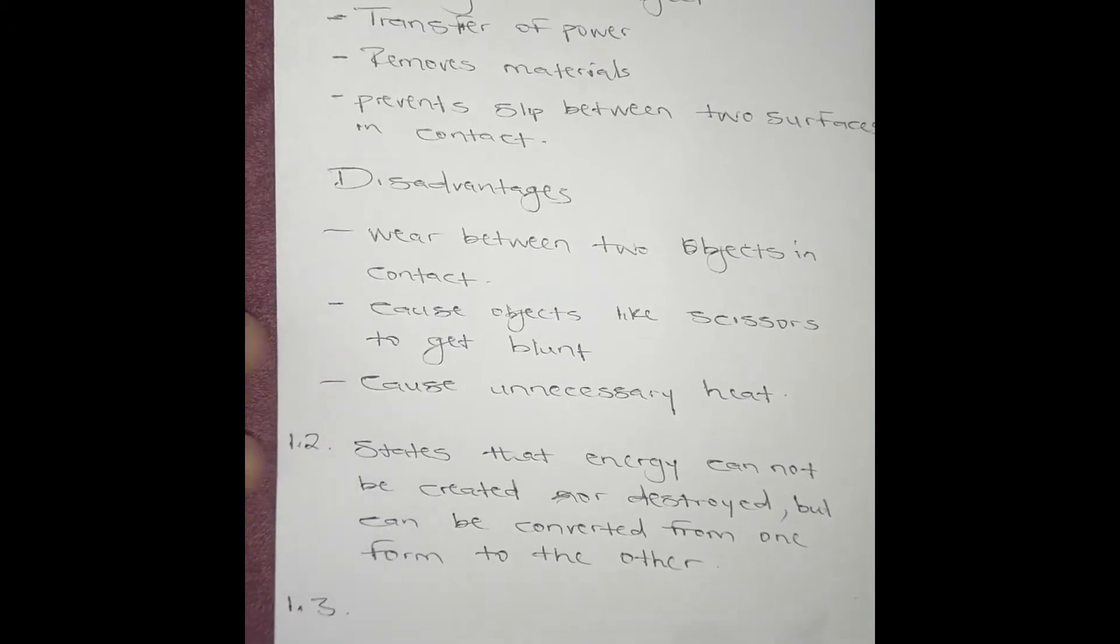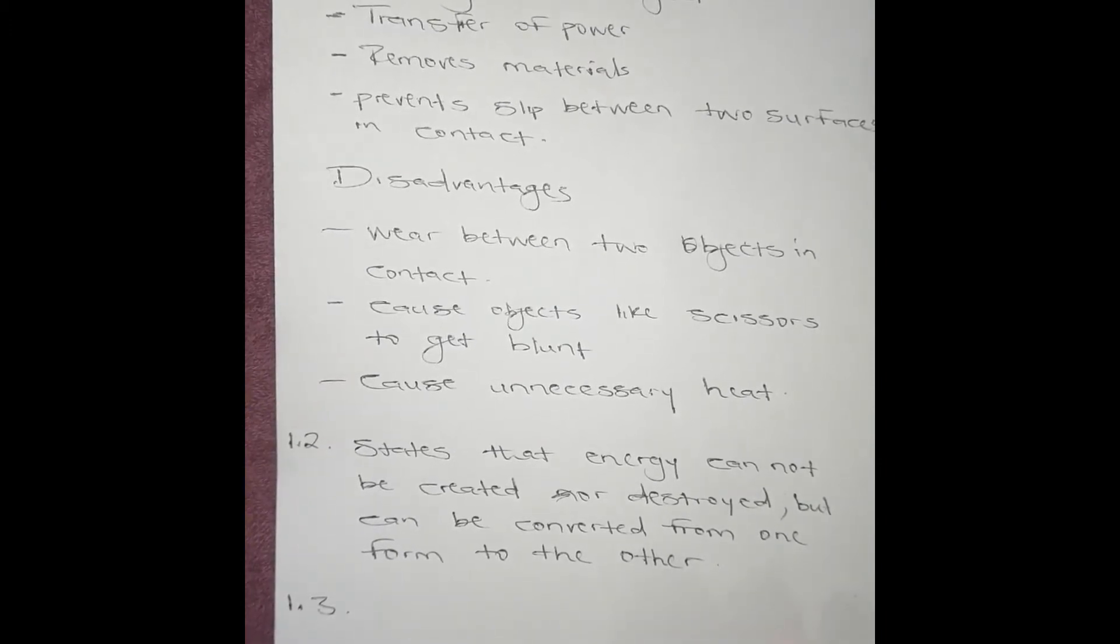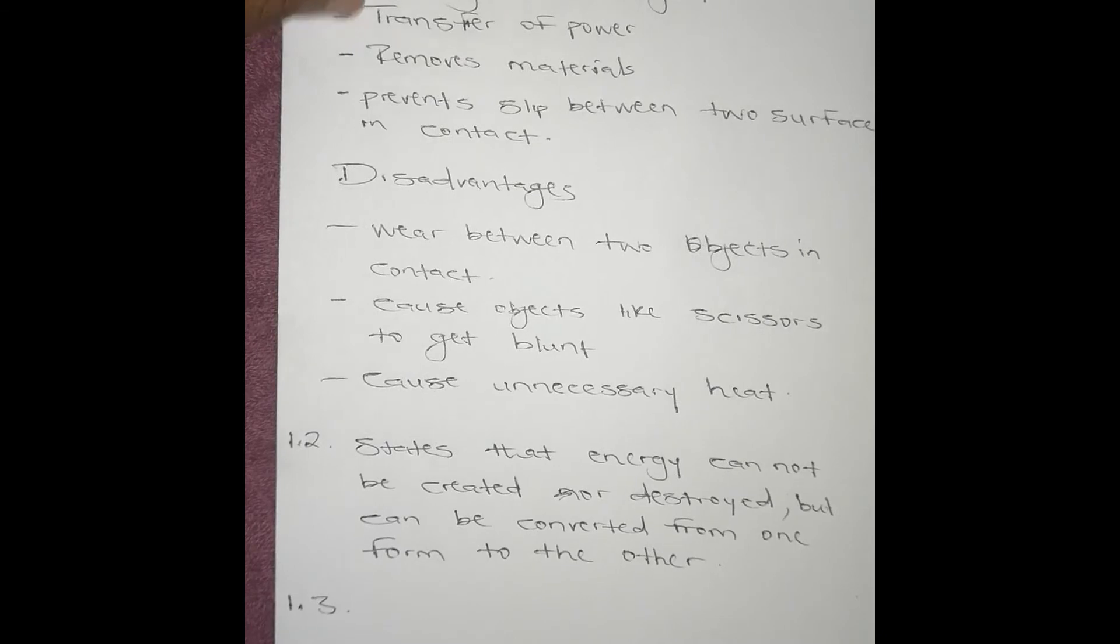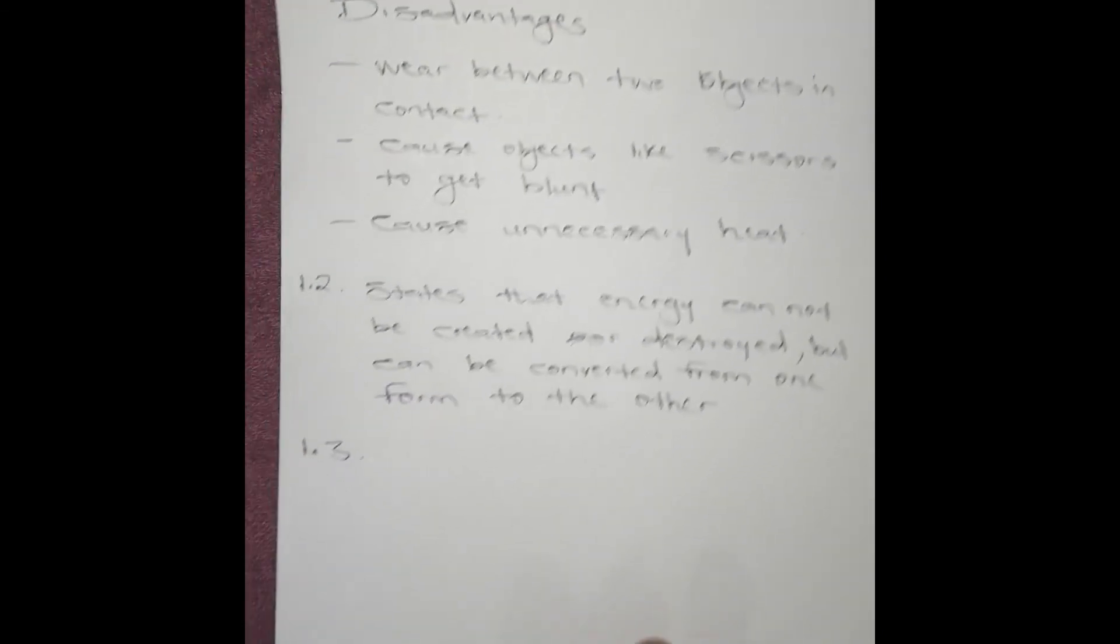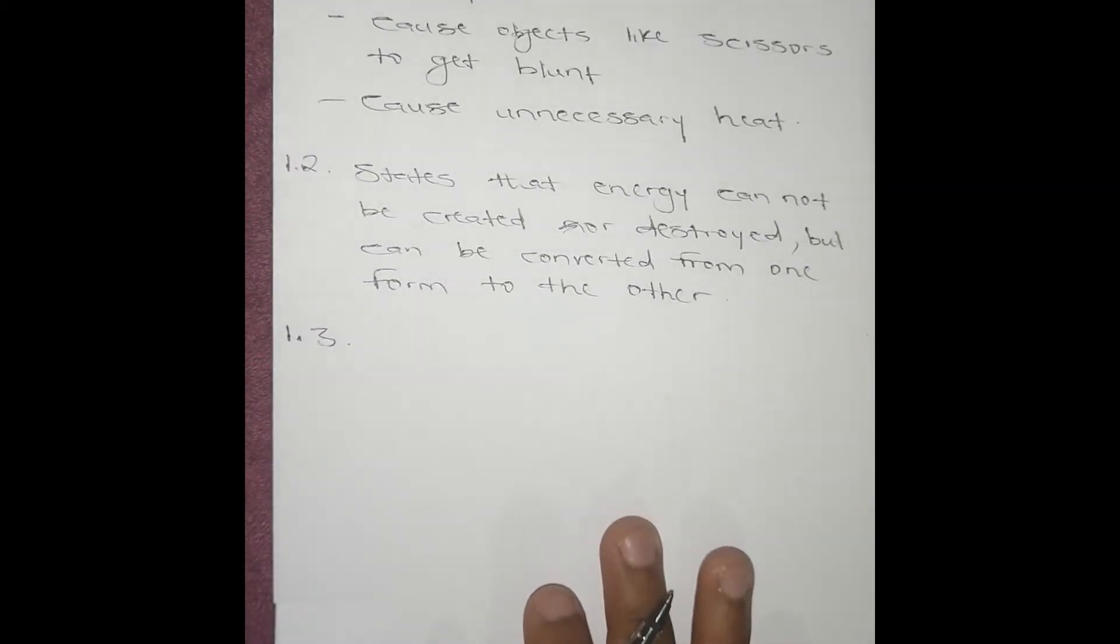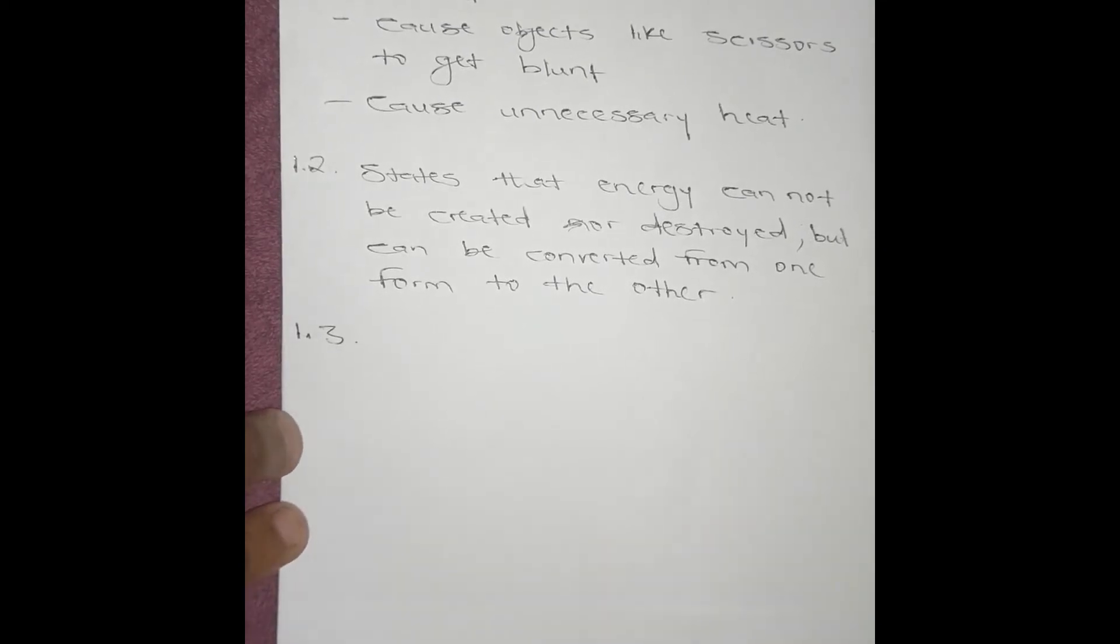1.3 says define the specific heat capacity of a substance. Specific heat capacity is the quantity of energy required to raise the temperature of 1 kg of that substance by 1 degree Celsius.